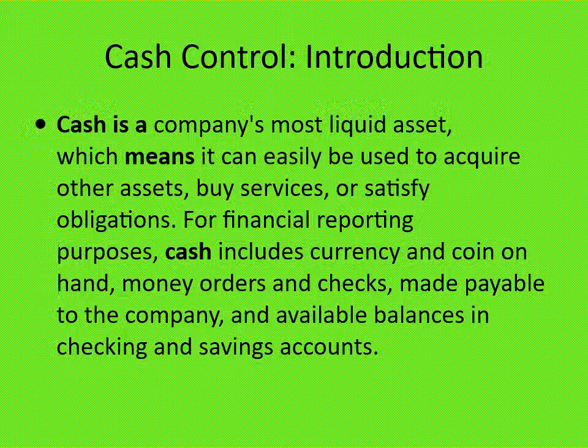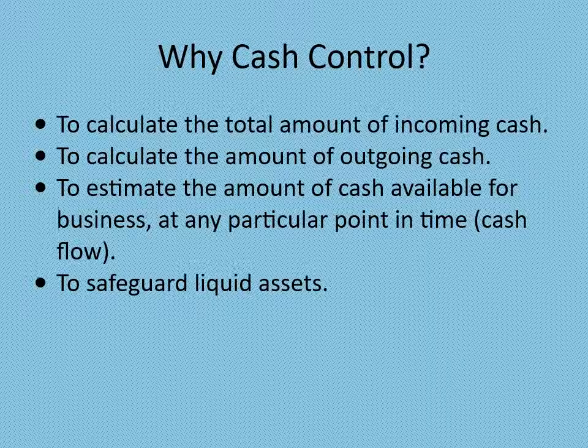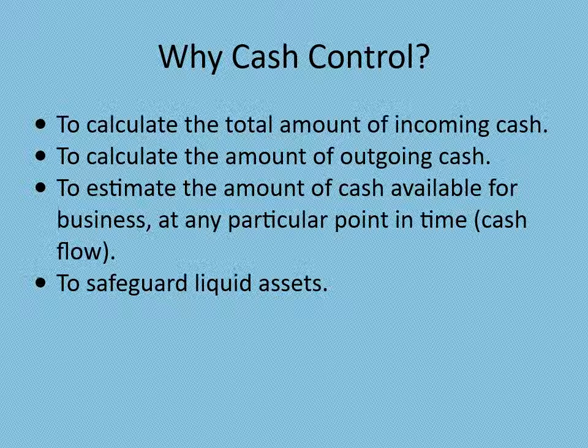Cash control introduction: Cash is a company's most liquid asset, which means it can easily be used to acquire other assets, buy services, or satisfy obligations. For financial reporting purposes, cash includes currency and coin on hand, money orders, and checks made payable to the company, and available balances in checking and savings accounts. Cash control helps calculate incoming and outgoing cash, estimate cash available at any point in time (cash flow), and safeguard liquid assets.